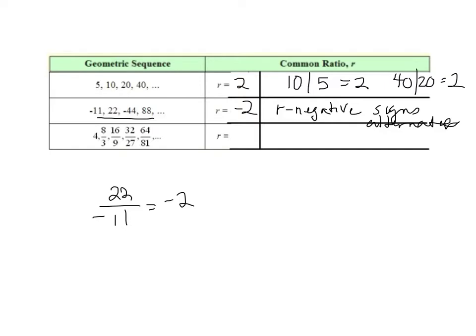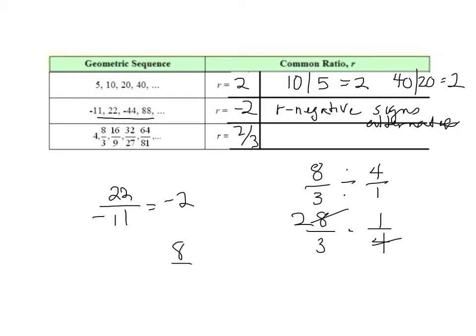This last one looks a little strange. I have 8/3 divided by 4, so 8/3 times 1/4 cancels and r is actually 2/3. Then 8/3 times 2/3 is 16/9 — yes. Times 2/3 is 32/27 — yes, that works. This is actually a decay exponential because r is between 0 and 1.